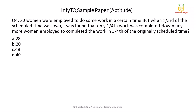Question number four is from the topic Time and Work. 20 women were employed to do some work in a certain time. But when one third of the scheduled time was over, it was found that only one fourth of the work was completed. How many more women need to be employed to complete the work in three-fourths of the originally scheduled time?